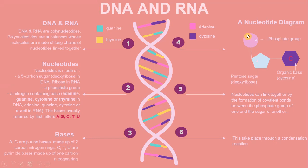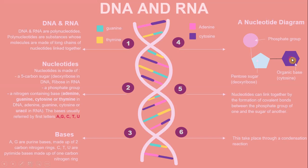This is an example of the nucleotide diagram, where it consists of a phosphate group, pentose sugar which is deoxyribose, and an organic base — in this case, cytosine. Nucleotides can link together by the formation of covalent bonds between the phosphate group of one and the sugar of another, through a condensation reaction.